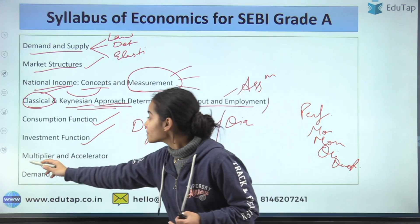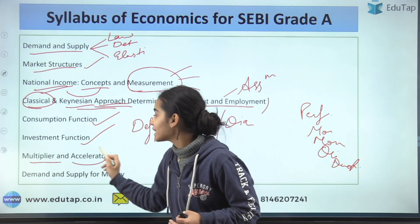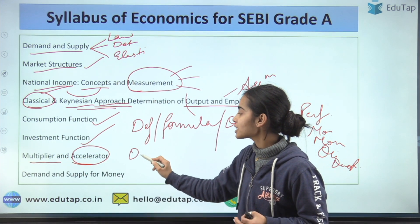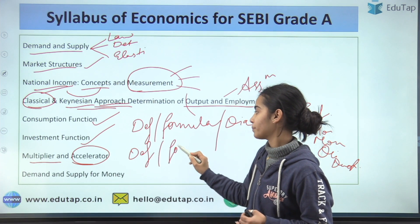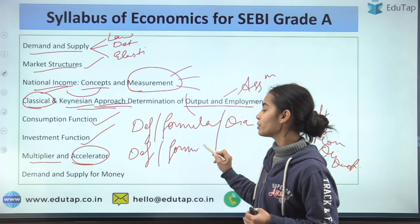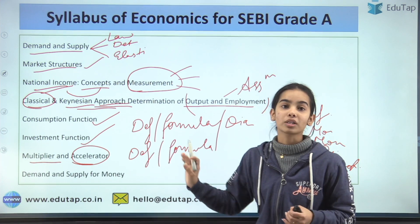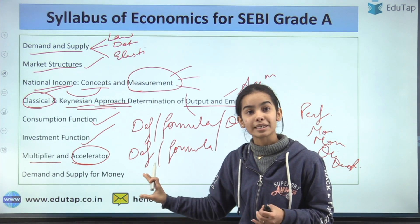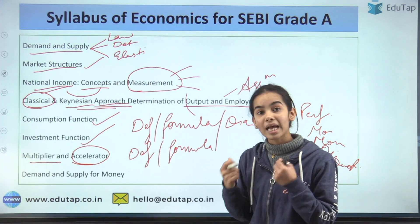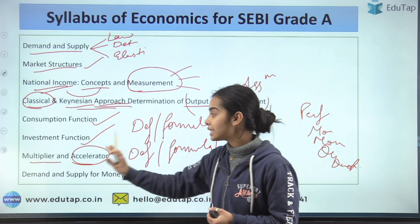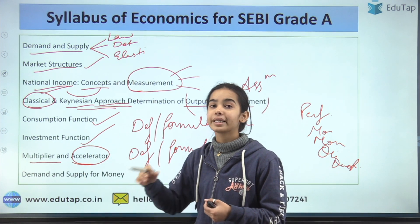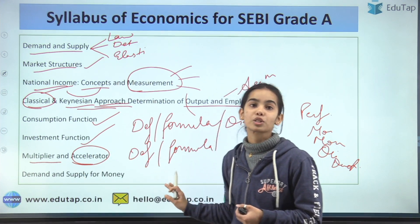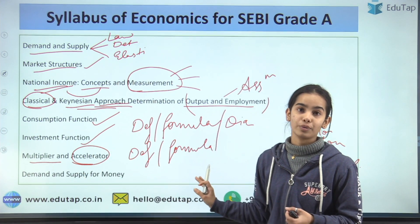Then comes the multiplier and the accelerator. For these also, you just need to know the definition and the formula — that will be more than enough. If you understand what these terms mean, the formula will also be very easy.